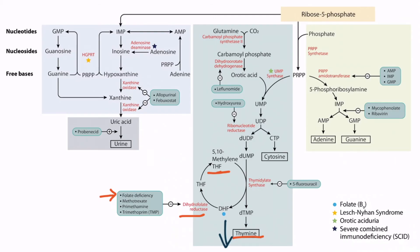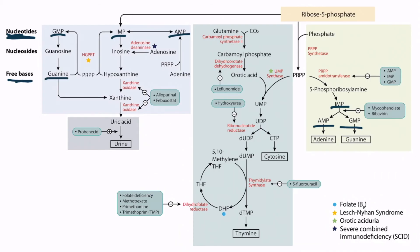Now let's turn our attention to the purine salvage pathway. Purines can be synthesized from scratch or recycled in order to conserve energy. Notice that the purines synthesized in the de novo pathway — IMP, AMP, and GMP — are also present in the purine salvage pathway. This pathway can use free bases such as guanine and hypoxanthine and convert these back into GMP, IMP, and AMP. These can then be converted back into nitrogenous bases and used to synthesize nucleic acids.